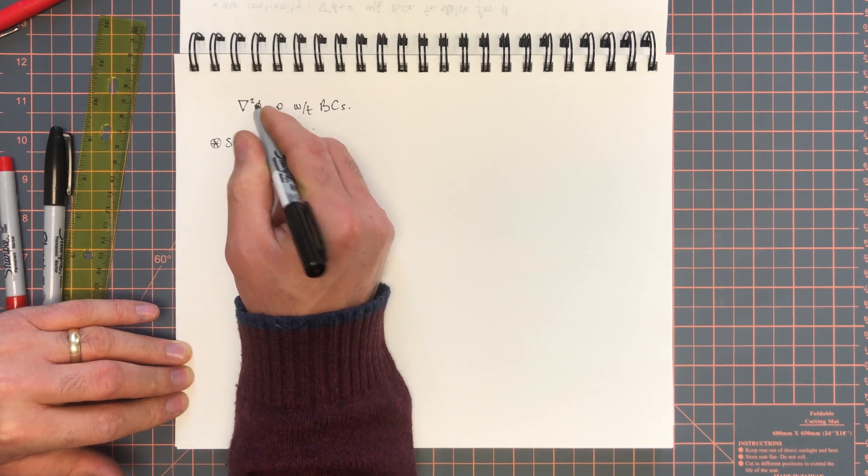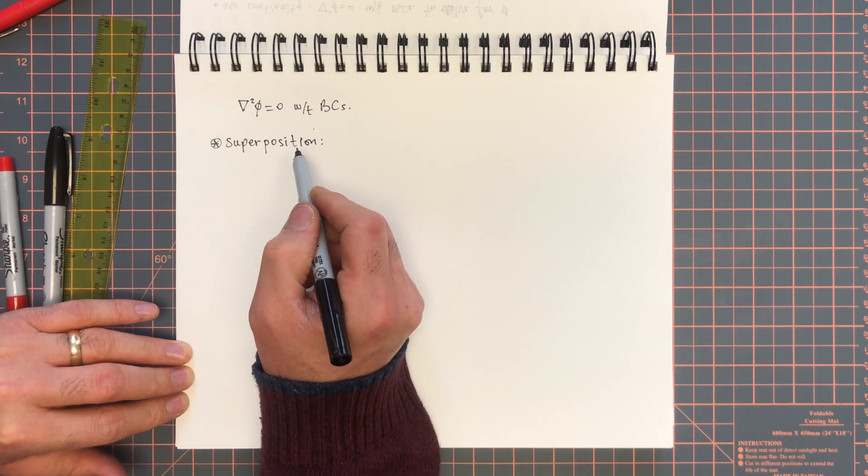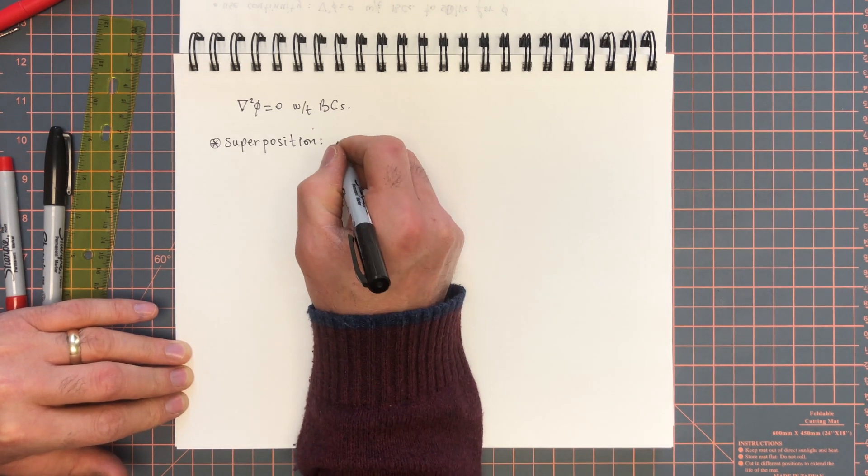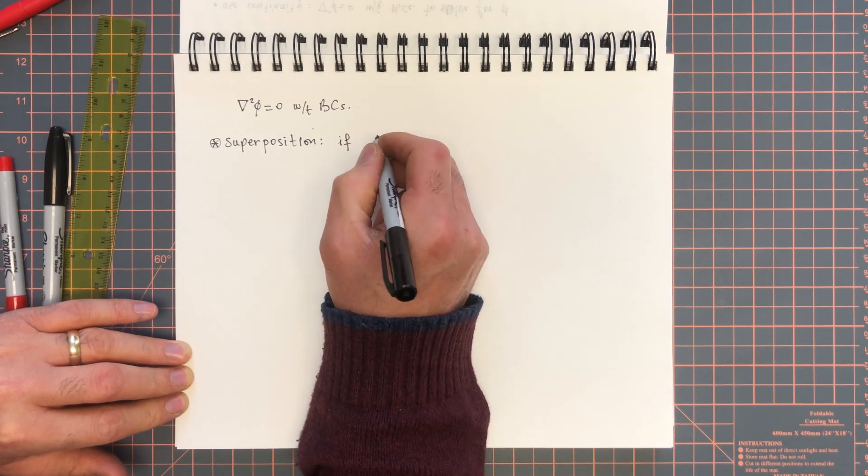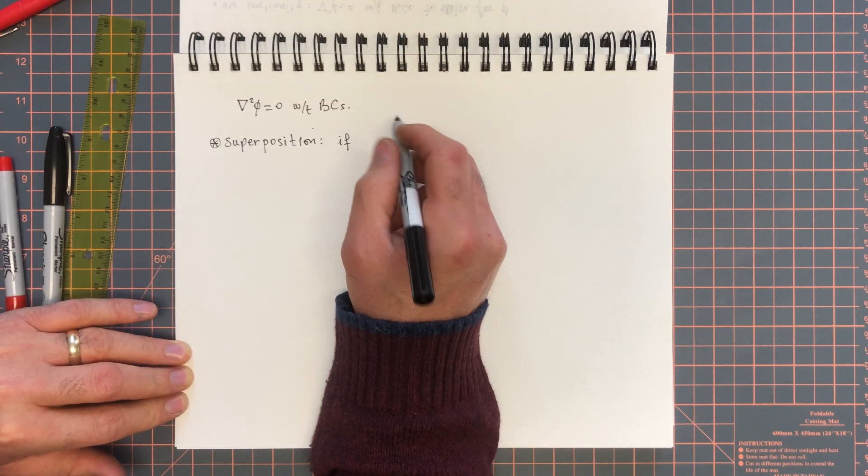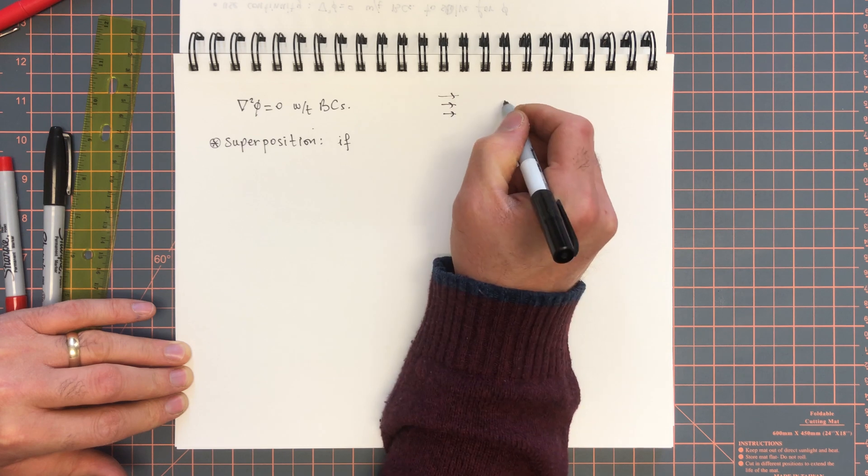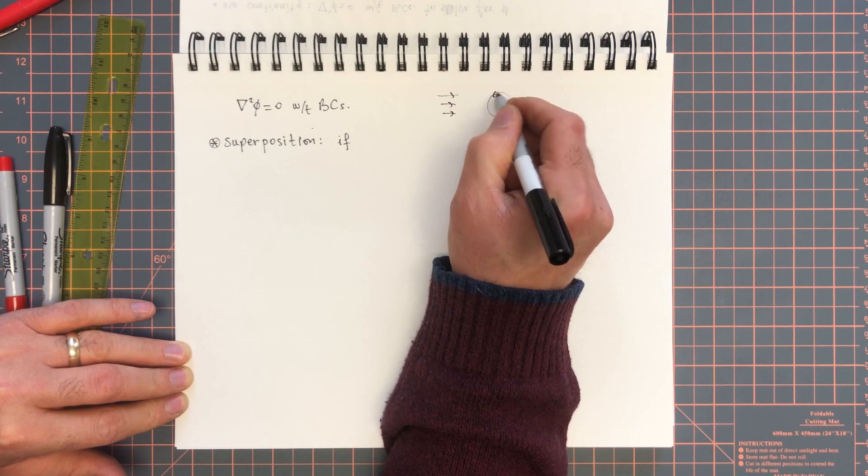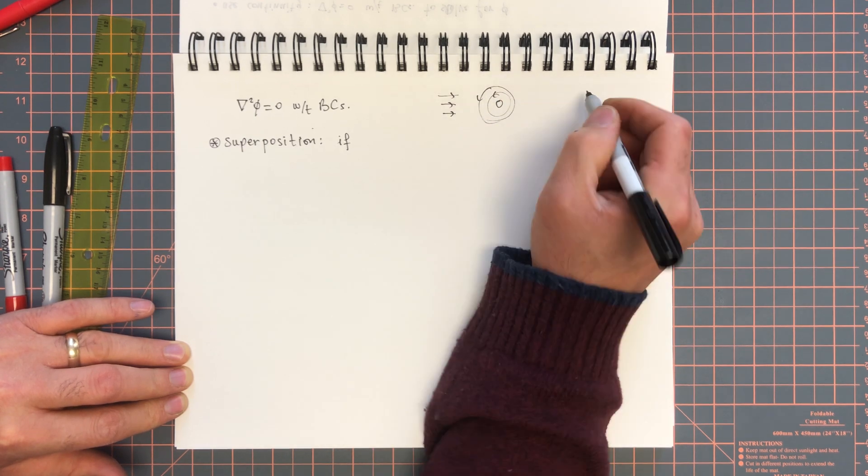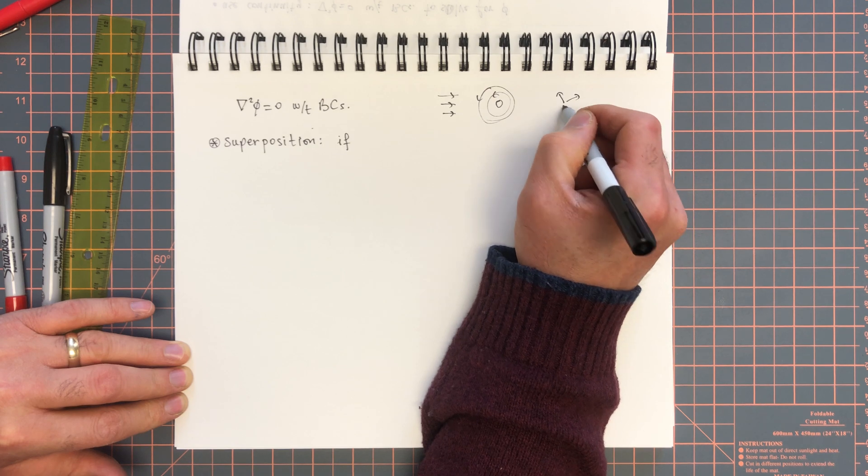So now, del squared phi is a linear operator. What does that mean? If we find, assume that somehow we have a few potential flows, like uniform flow and then the irrotational vortex, and maybe another flow with a source, et cetera.